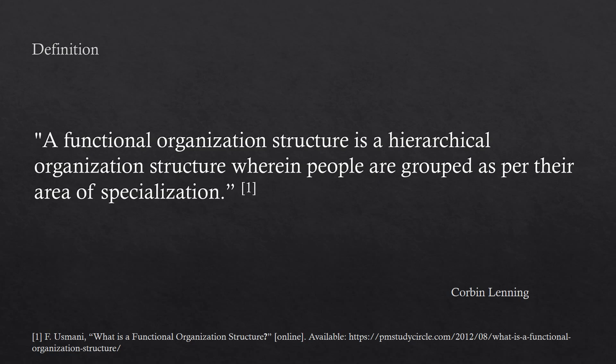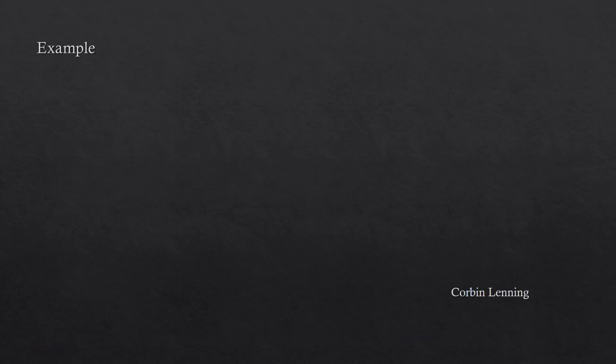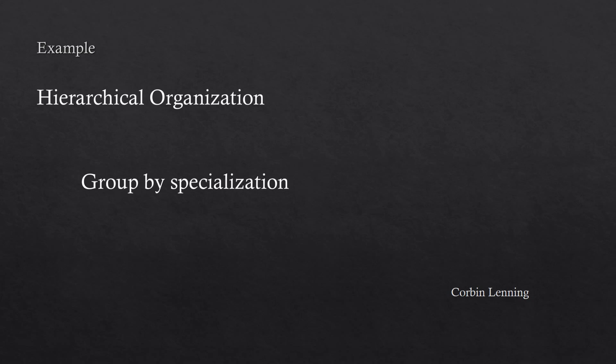According to Usmani, the definition of a functional organization structure is a hierarchical organization structure wherein people are grouped as per their area of specialization. I broke down functional organization into three topics: hierarchical organization, group by specialization, and management.